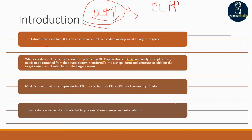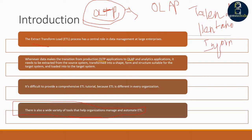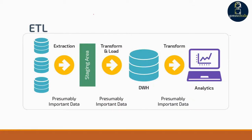General ETL components include aggregation, sample rows, filtering, mapping, and union. There is also a wide variety of tools that help organizations manage and automate ETL. The tools available include Talend (which we'll use in this tutorial), Pentaho Data Integration, Informatica PowerCenter, SSIS, and many more. We'll focus on Talend because it is open source.